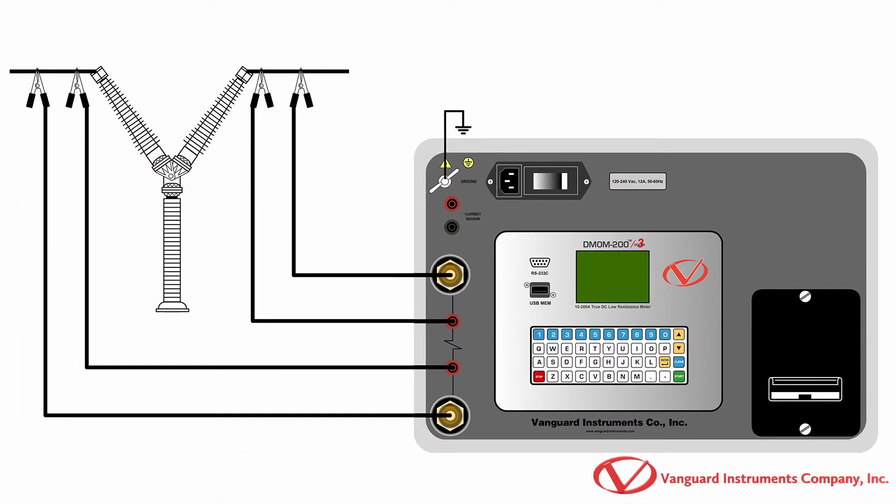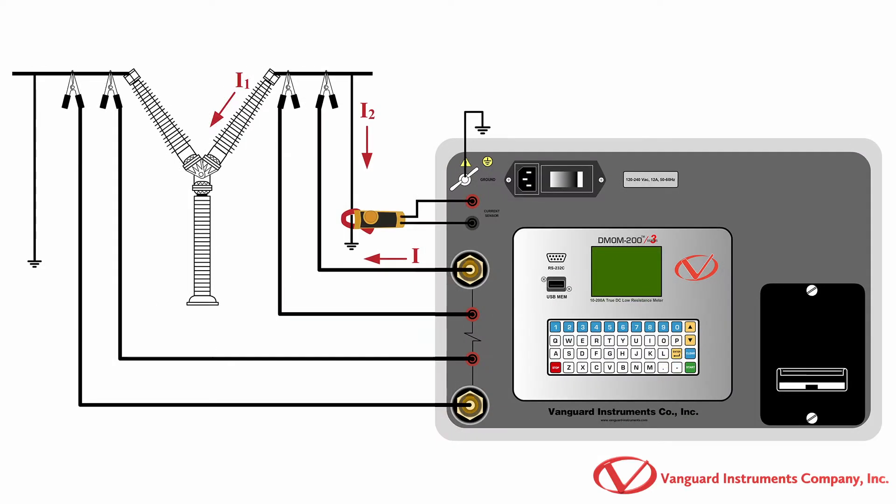Typical connections are shown in this illustration. The DMOM200S3 also offers a dual ground option that allows for testing to be performed with both sides of the breaker grounded. This option includes a DC current clamp that is connected as shown in this illustration.